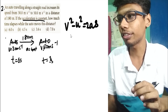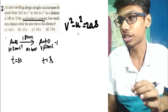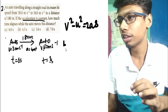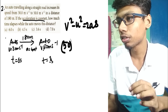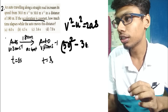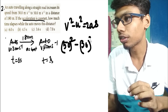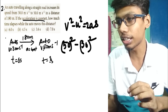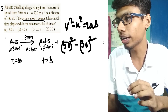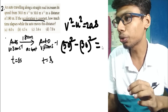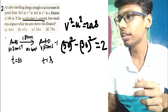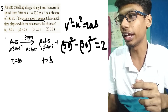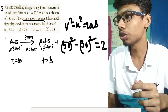The final velocity v is 50, so that is 50 squared. Minus the initial velocity u which is 30, so 30 squared, equals 2 times the acceleration a — which is constant — times the displacement s, which is 180 meters.